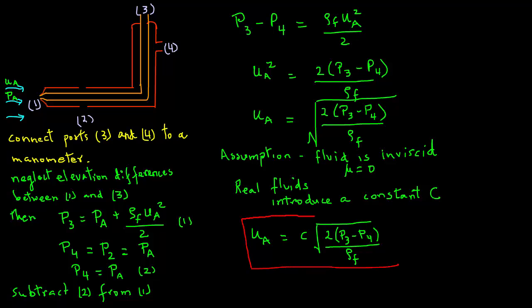to determine velocity at location A with a Pitot tube if we can get a measurement of the pressure difference at locations 3 and 4. Of course, we will also need the density of the fluid of which we are trying to measure the velocity.